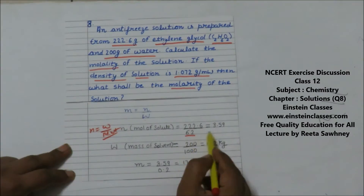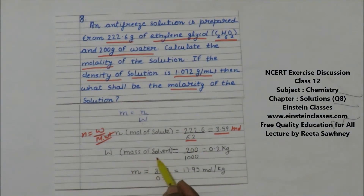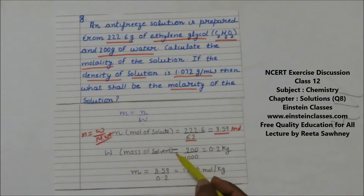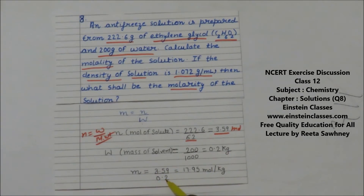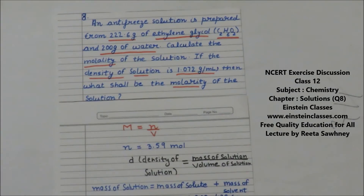Moles of solute = 222.6 / 62 = 3.59 moles. The mass of solvent (water) is 200 grams, which in molality must be taken in kilograms, so mass of solvent = 0.2 kg. Therefore, molality = moles of solute / mass of solvent = 17.95 mol per kg.